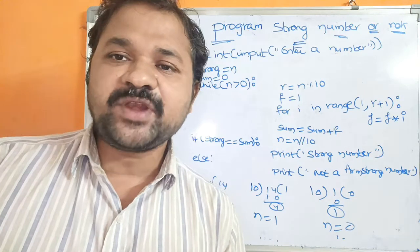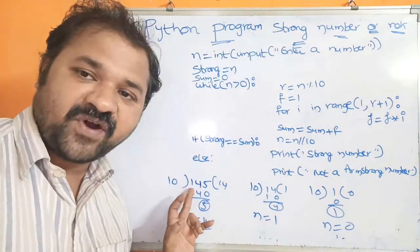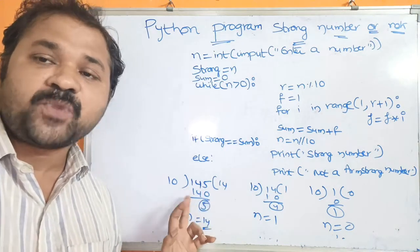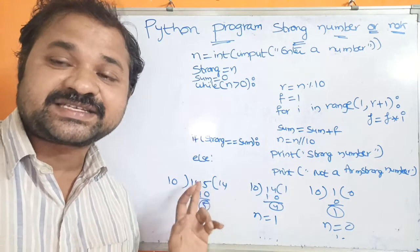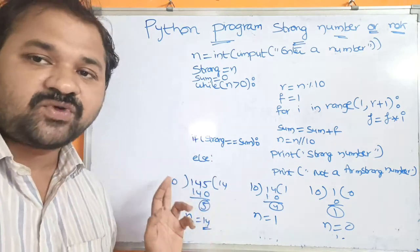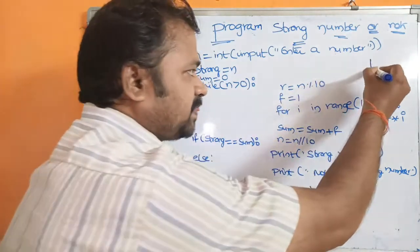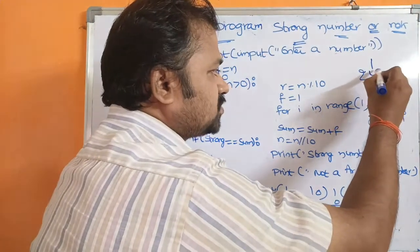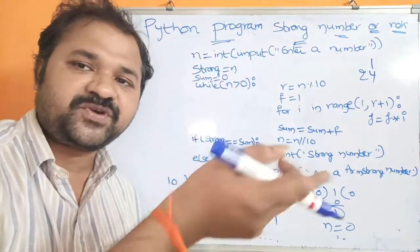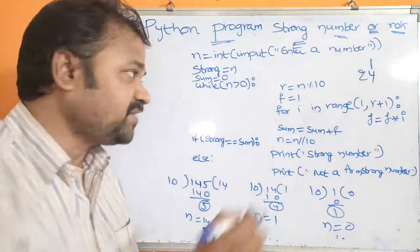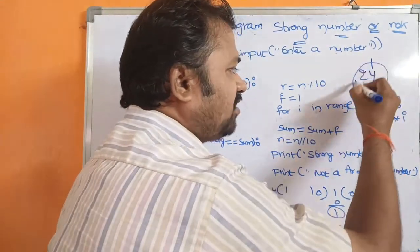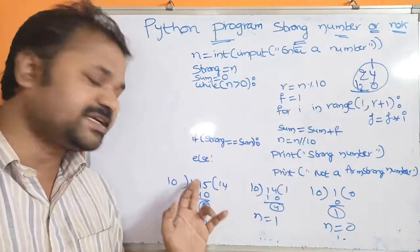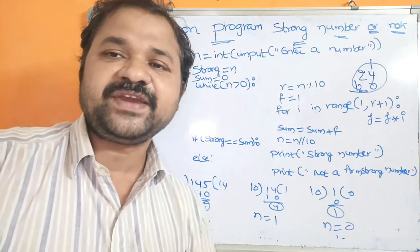The best example of a strong number is 145. In 145 we have 3 digits. The sum of factorials of these 3 digits equals 145. 1 factorial is 1, 4 factorial is 24 (4×3=12, 12×2=24, 24×1=24), and 5 factorial is 120. Adding all three: 1 + 24 + 120 = 145, which is the given number. So we can say that 145 is a strong number.